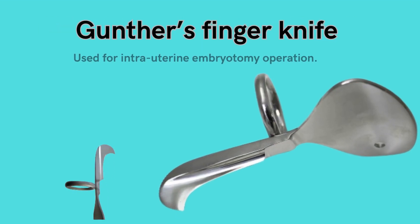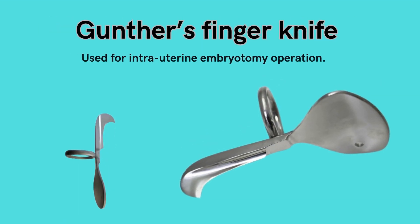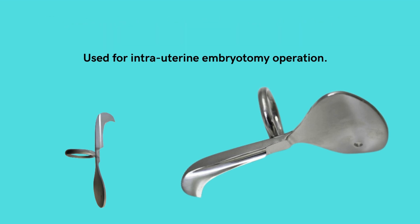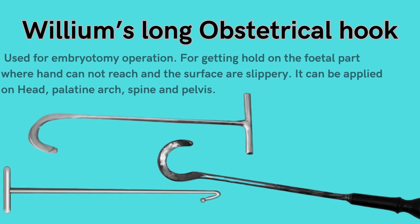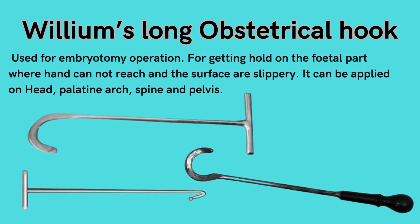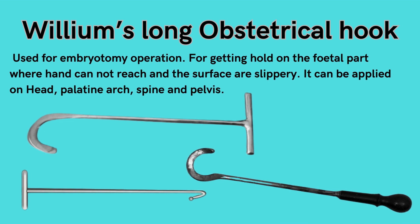Gunther's finger knife: used for intrauterine embryotomy operation. Williams' long obstetrical hook: used for embryotomy operation, for getting hold on a fetal part where the hand cannot reach and the surfaces are slippery. It can be applied on the head, palatine arch, spine, and pelvis.